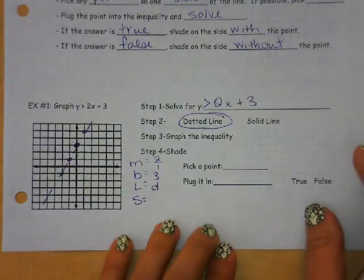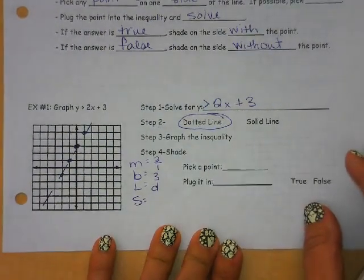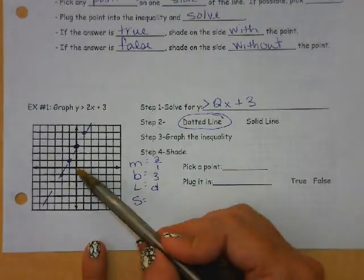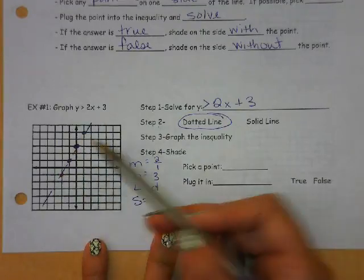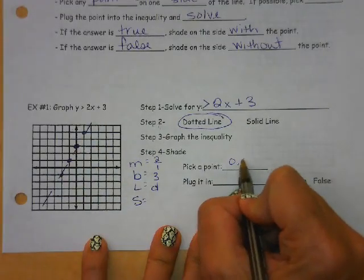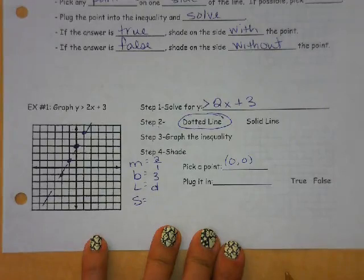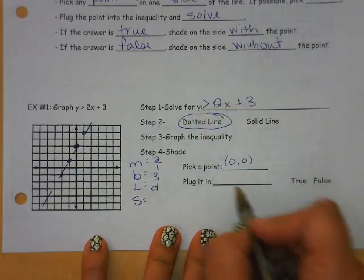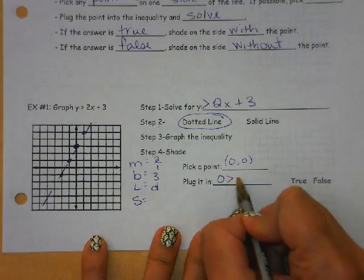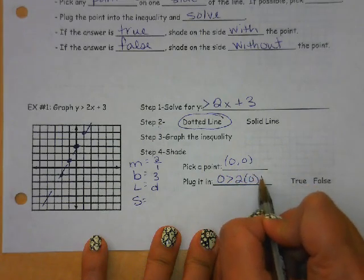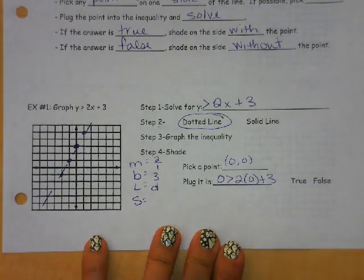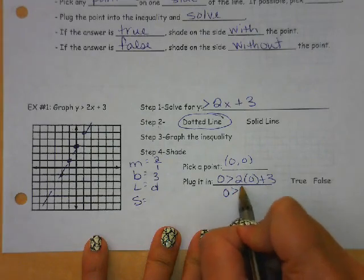Now, this is the part where we need to decide which side to shade. The origin is down here. It is not on the dotted line. So one method is to pick a point, and we're going to plug it in. So we're going to put 0 in for x and y, so I have 0 is greater than 2 times 0 plus 3. I don't really need the calculator for that. 0 is greater than 3. Well...